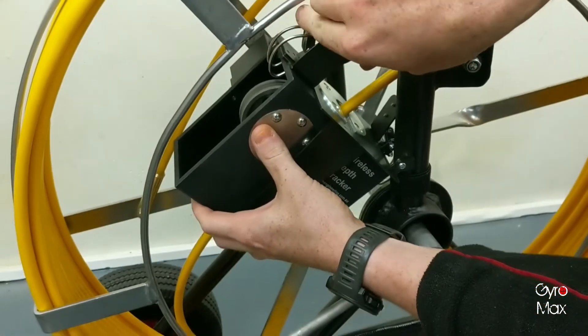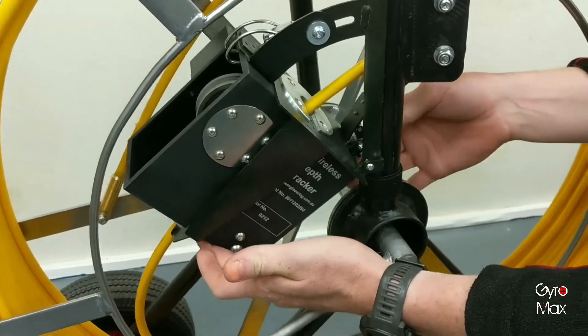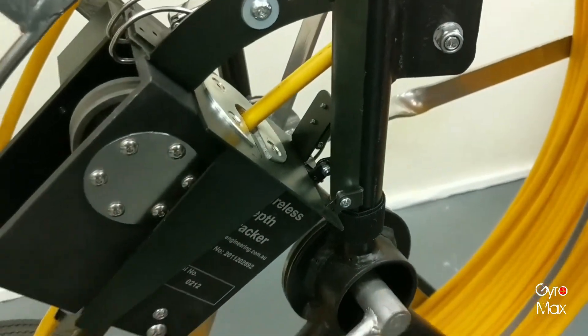Then you go to the top and clamp the top. There's another one underneath here, and you clamp that one. That's the wheel in place.